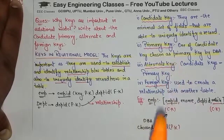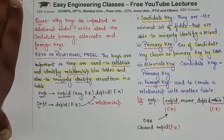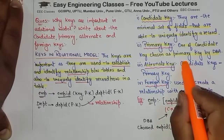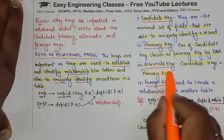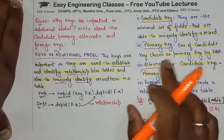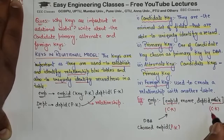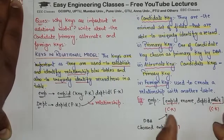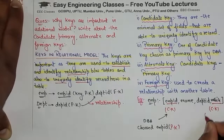Then alternate key — jitni bhi candidate keys thin, us mein se agar hum primary key ko hata den toh baaki sab kya bachegi? Alternate keys. So that means ab jo mobile number hai, yeh primary key nahi bani, toh isse hum bolenge alternate key.